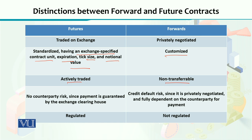With a forward contract, if you have a contract signed, you can transfer it to someone else. But with futures, that doesn't happen — futures are actively traded, meaning whenever you get a contract, you can immediately go to the exchange and sell it. Another key difference: with futures, there is no counterparty risk since payment is guaranteed by the exchange clearinghouse. With forwards, credit default risk is possible because the entire process is privately negotiated and fully dependent on the counterparty for payment.